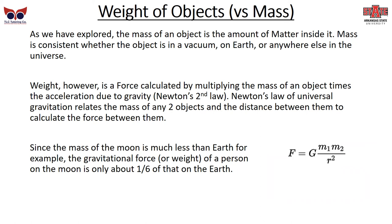Weight is different from mass. Mass is how much matter is inside you and is consistent whether you're on Earth, in a vacuum, or on Mars. Weight, however, is a force calculated by multiplying mass times acceleration (F = ma). On Earth, gravity is 9.8 m/s². The law of universal gravitation, another of Newton's contributions, relates the mass of any two objects and the distance between them to calculate the gravitational force: F = G × M₁ × M₂ / r².